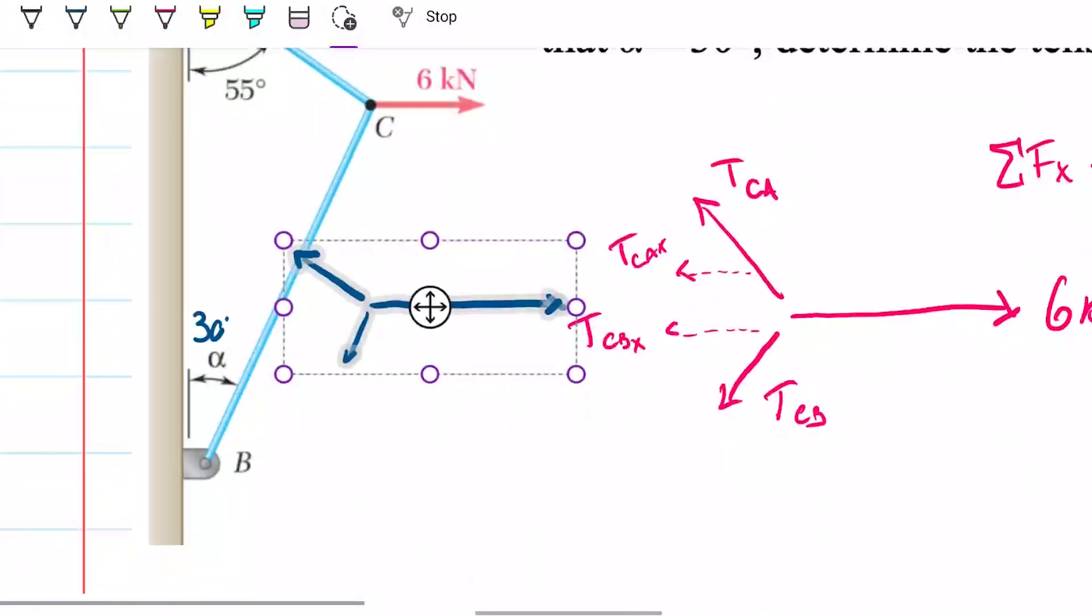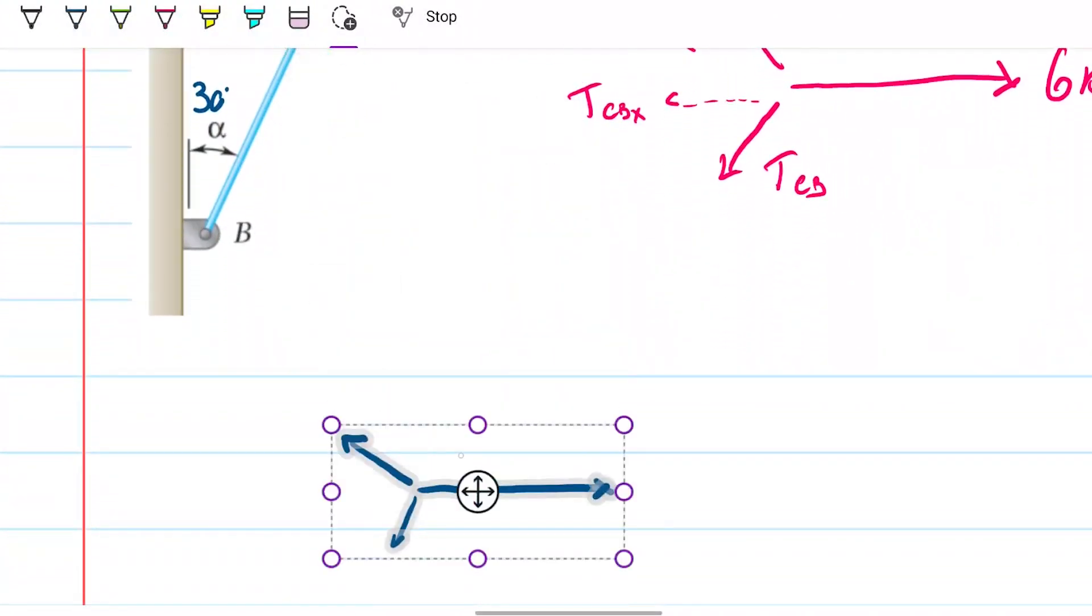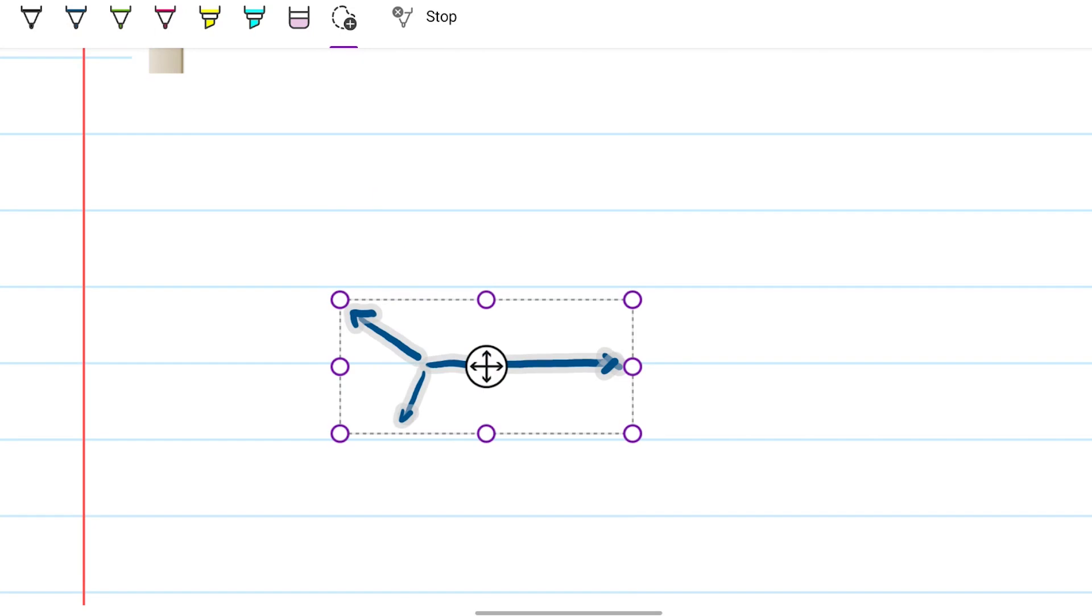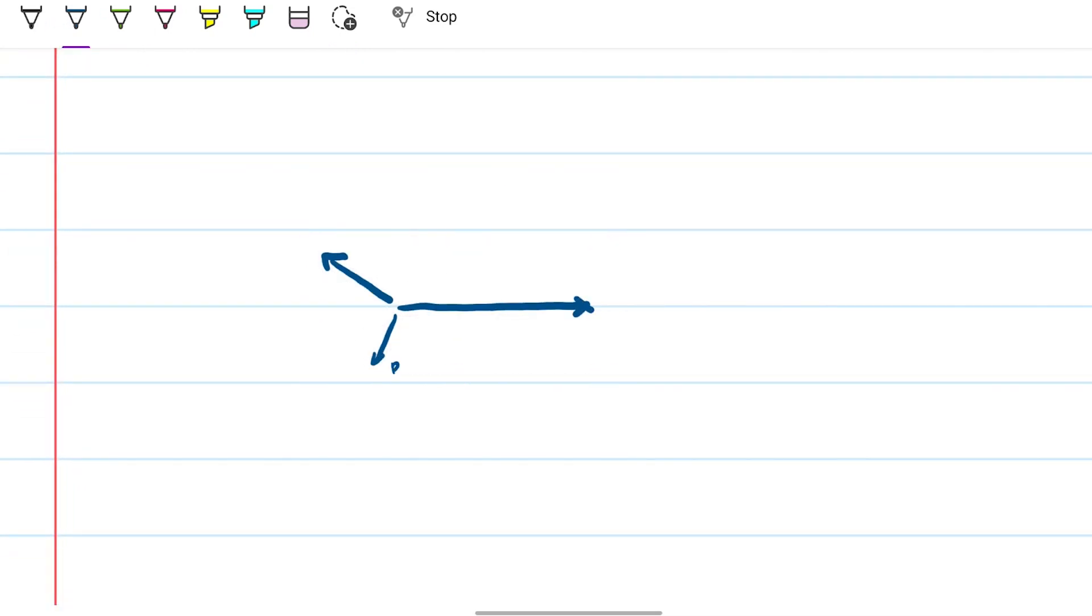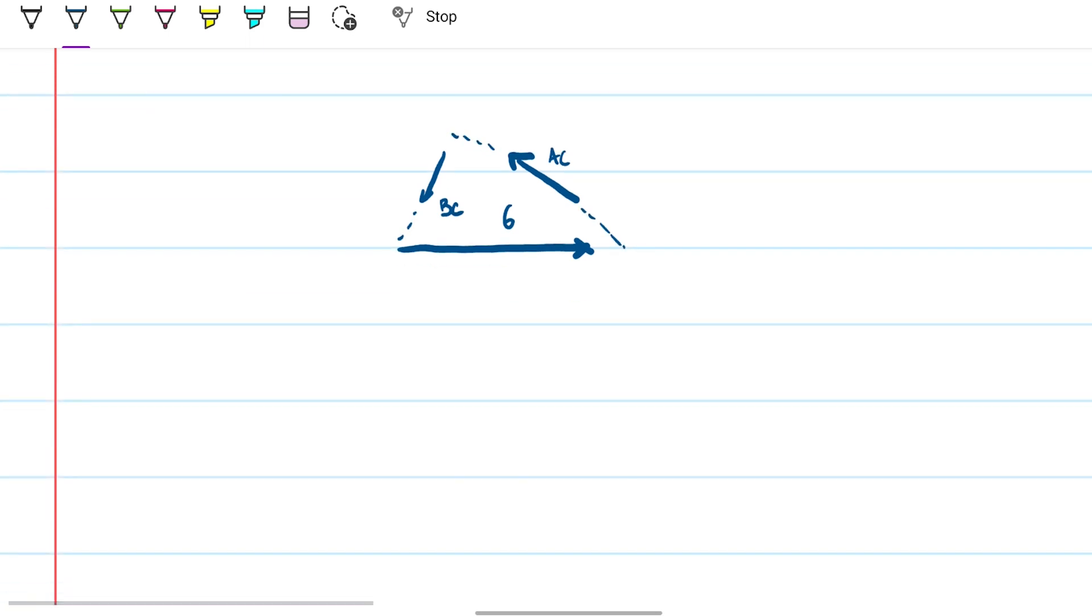Once you do that, what you can do is create a triangle force triangle relating these three components. Again, this is my BC, this is my AC, and this is my 6 over here. What I'm going to do is literally just try to place them in a way that I create a triangle. And here's my triangle. So the first step is create this triangle and see what it's going to look like by knowing the length of each of these arrows. That's my triangle there. So what I'm going to do now is I'm going to make this triangle a bit bigger so I can start working on it with the information that I know.